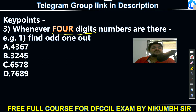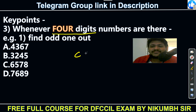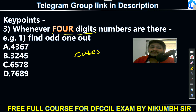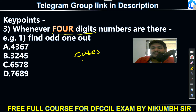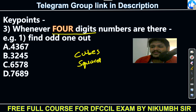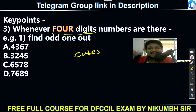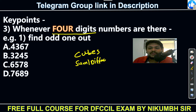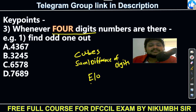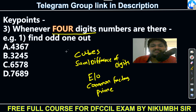For four-digit numbers, the sequence changes again. First check Cubes — you should know cubes up to 15. Then check Sum and Difference of digits — very important, second priority. Third is Even/Odd. Fourth is Common Factors. Fifth is Prime numbers. Squares are generally not checked for four-digit numbers since 20 squared is only 400, a three-digit number.